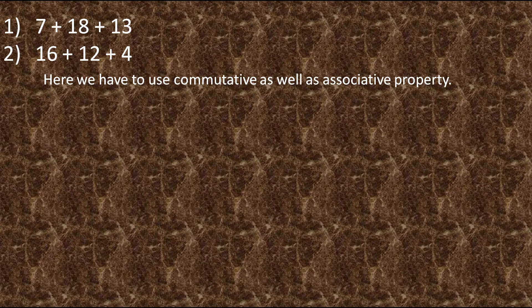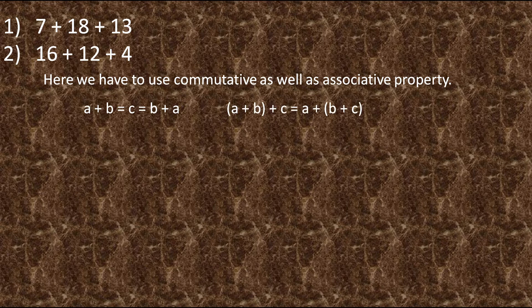Here we are going to use commutative as well as associative property. Commutative property says that we can interchange the place of numbers while adding, and associative property says that the grouping of numbers will never change the result of addition. Let's take the first equation. We have to find out the combination of numbers.